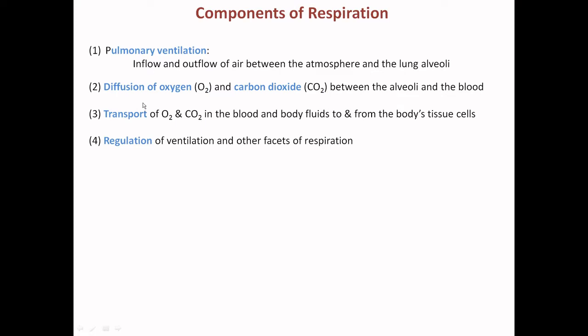The O2 from the atmosphere that is diffused into the blood will be carried to each and every cell of the body, and the CO2 produced as a byproduct of metabolism — the waste of metabolic activity in the tissues — will be carried from those parts into the lungs and finally excreted into the atmosphere. So transport takes place of O2 and CO2 between the lung and the tissues. Then there is regulation of the ventilation and other facets of respiration.